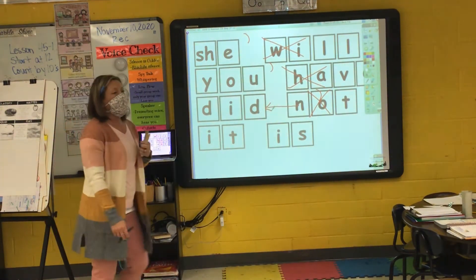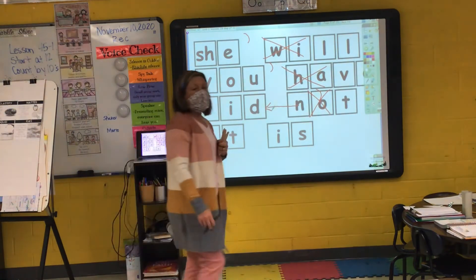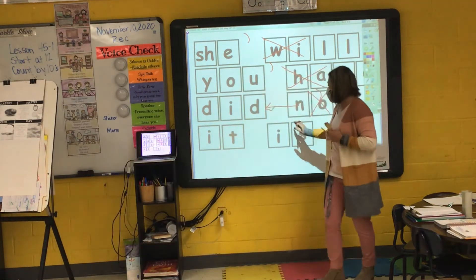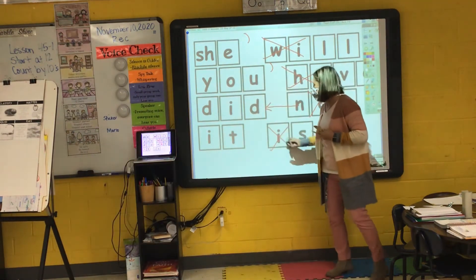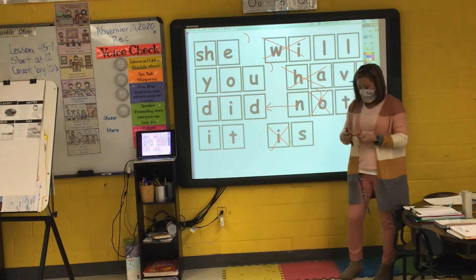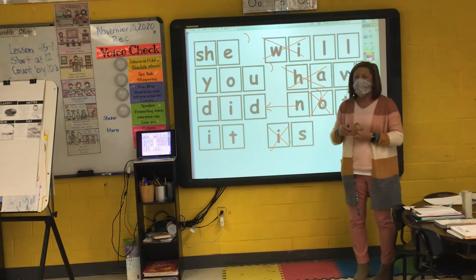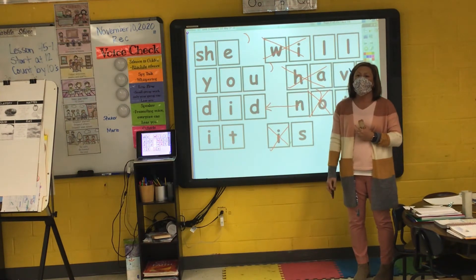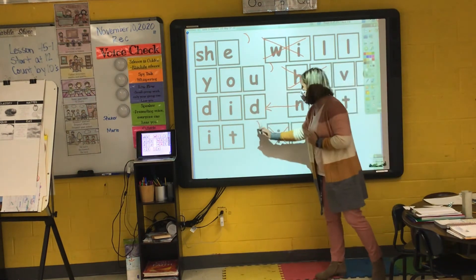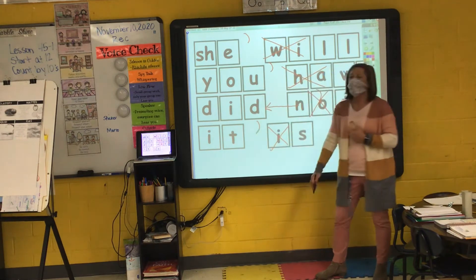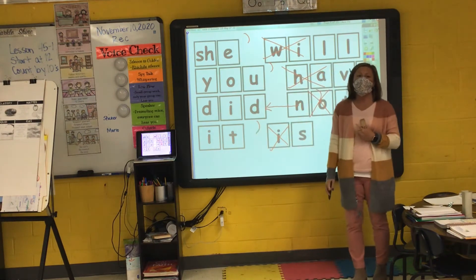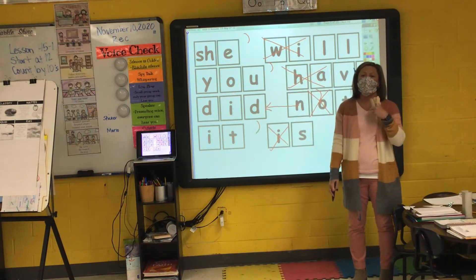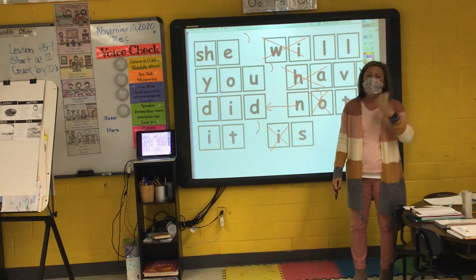My next two words are 'it' and 'is.' I'm going to take away the second I. And what do I replace that I with? An apostrophe — and I get the contraction 'it's.' I say it, you say it: 'it's.'